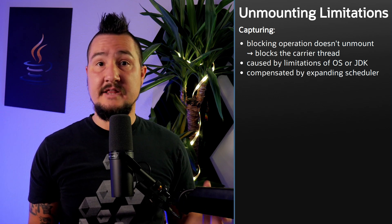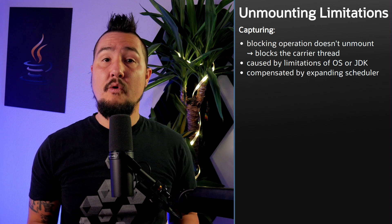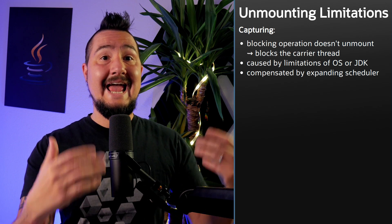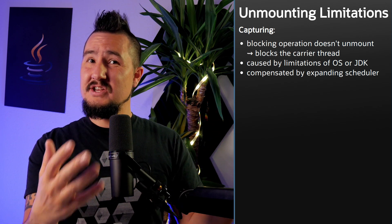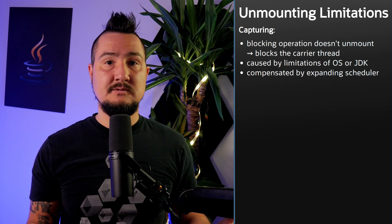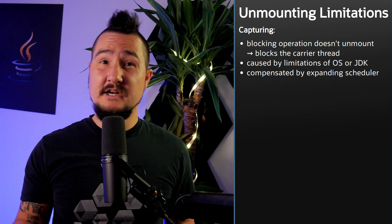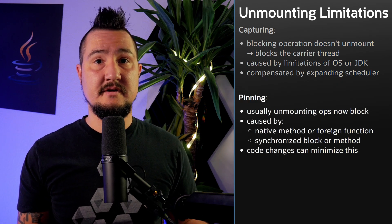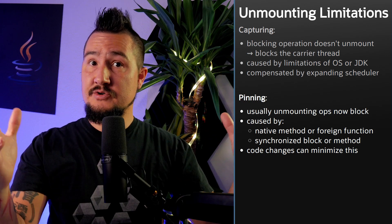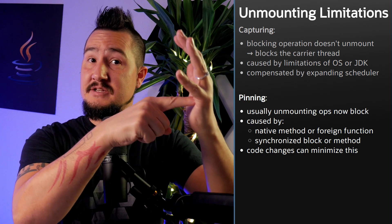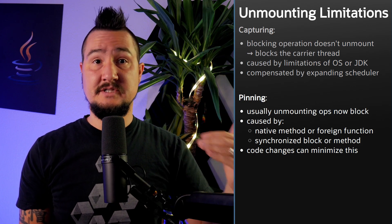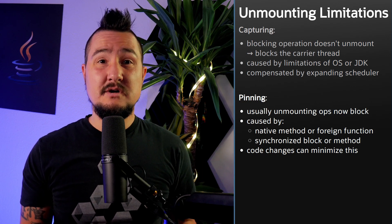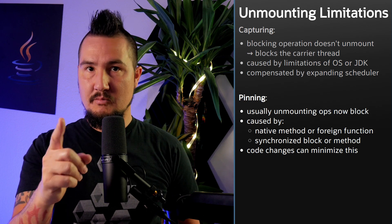This can be due to limitations at the OS level, which affects many file system operations, or at the JDK level, like object wait. The capture of an OS thread is compensated by temporarily adding a platform thread to the scheduler, which can hence occasionally exceed the number of available processors. A maximum can be specified with a system property. Unfortunately, there's one more imperfection in the initial proposal. When a virtual thread executes a native method or foreign function, or executes code inside a synchronized block or method, the virtual thread will be pinned to its carrier, and a pinned thread will not unmount in situations where it otherwise would. No platform thread is added to the scheduler in this situation, because there are a few things you can do to minimize the impact of pinning.